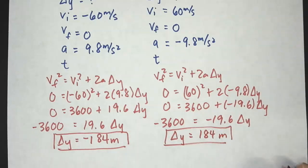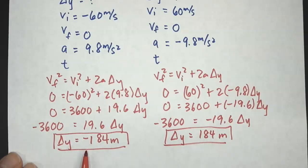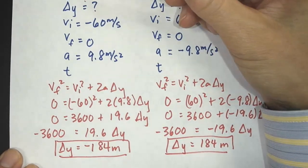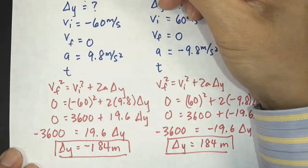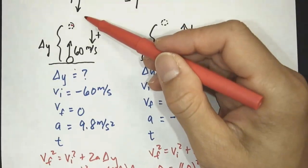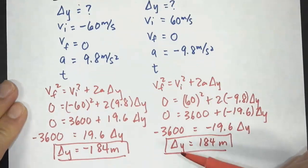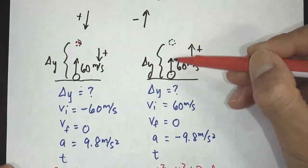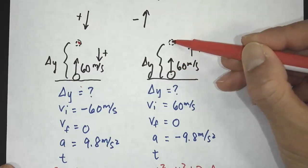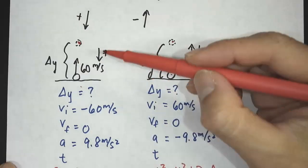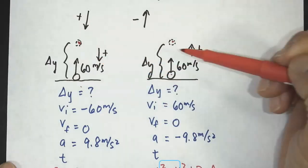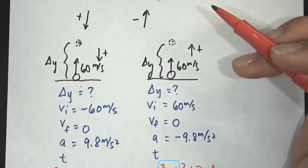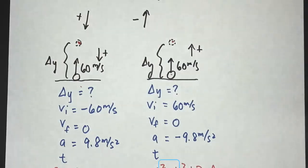Did I end up getting the same answer? Yes. The answers may look different — one is negative 184 and the other is positive 184 — but they both describe the same physical location: 184 meters upward. In both situations, whether I make down positive or up positive, I get the same answer. As long as I am consistent with the direction I define as positive and don't change it midway through the problem, I will get the correct answer.